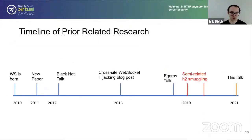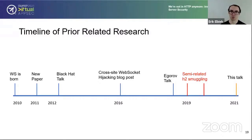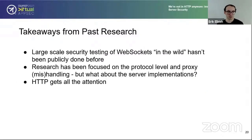This is a quick timeline of WebSocket security research history. The key point is that there hasn't been all that much when you compare it to a protocol like HTTP, which appears to get all the attention. The red events on the timeline are related to the HTTP 101 status, which is also used for HTTP/2 when you transition from HTTP/1. At a high level, there hasn't been a lot of large-scale security testing of WebSockets in the wild — it's been specific use cases and scenarios, often focused on the protocol level, and more recently on proxy mishandling.